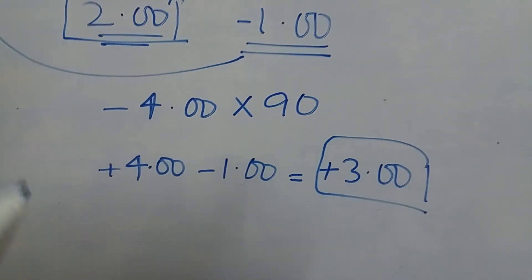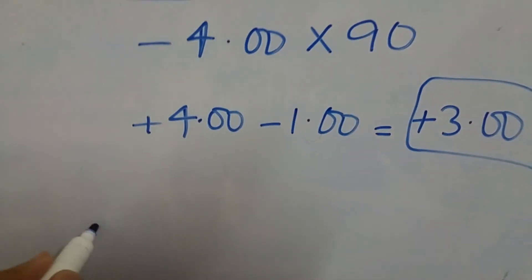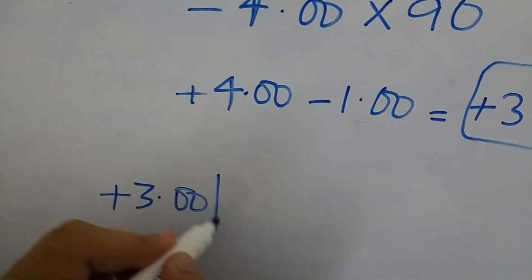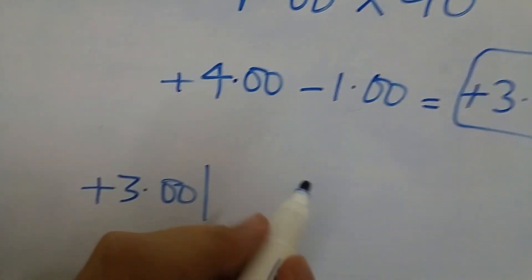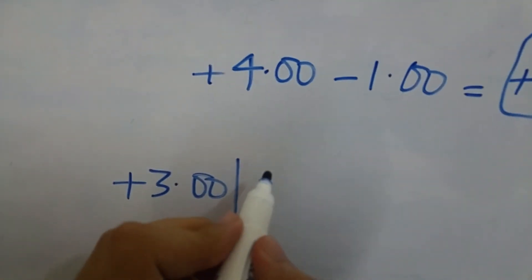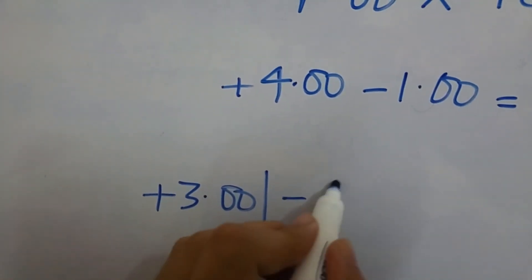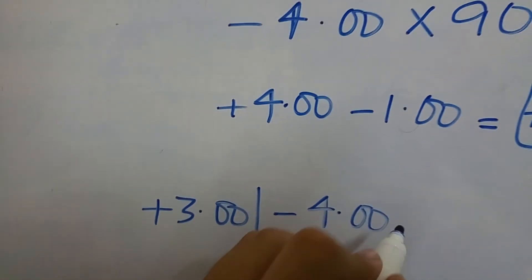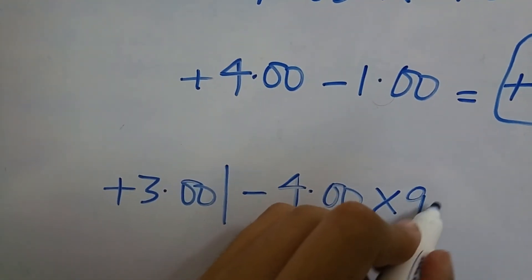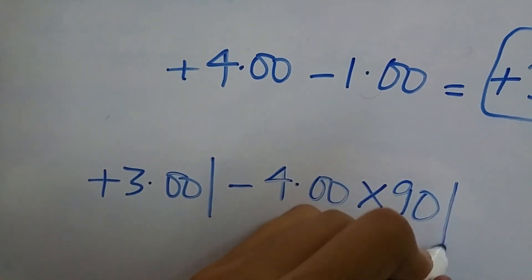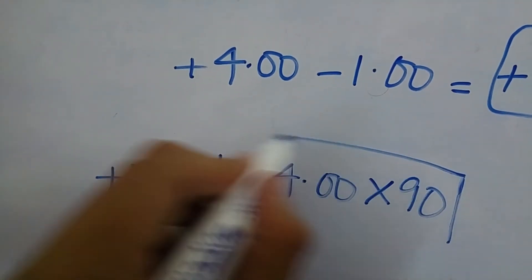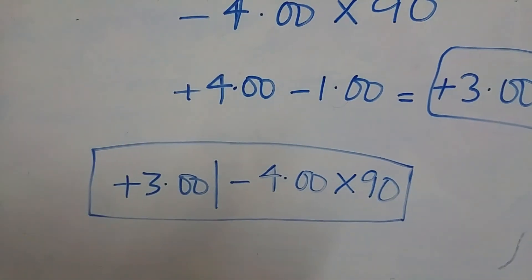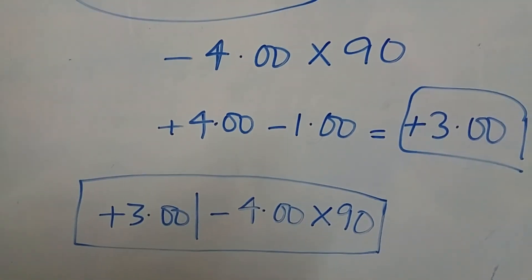So the result is plus three sphere with minus four cylinder and axis 90. This is how you do cylinder reduction.